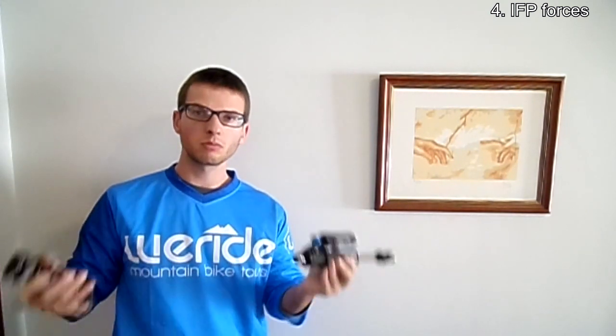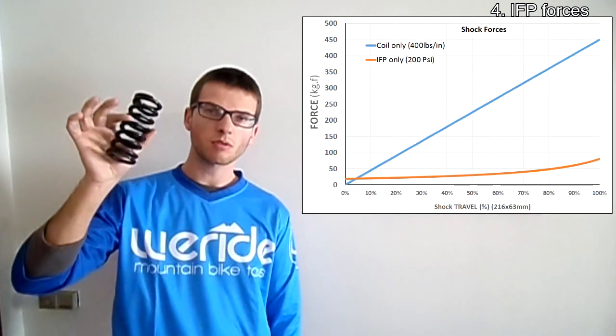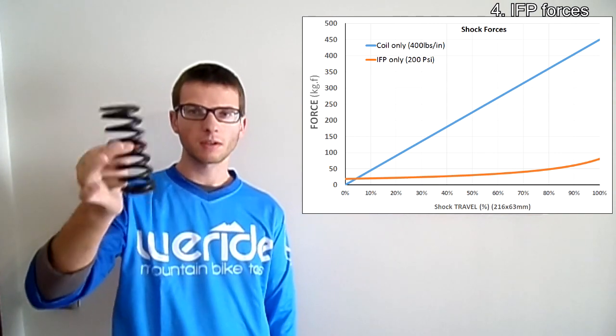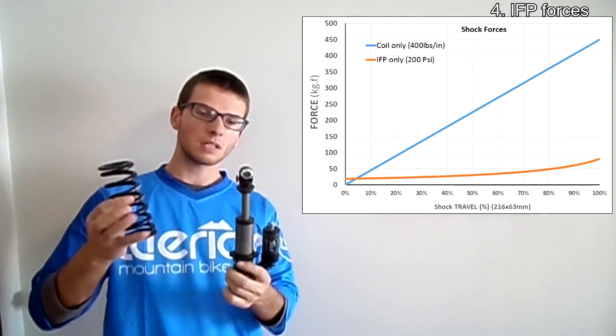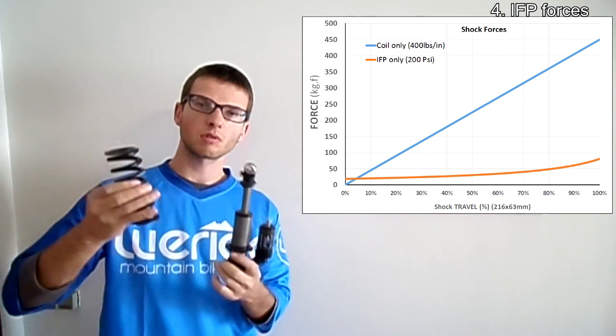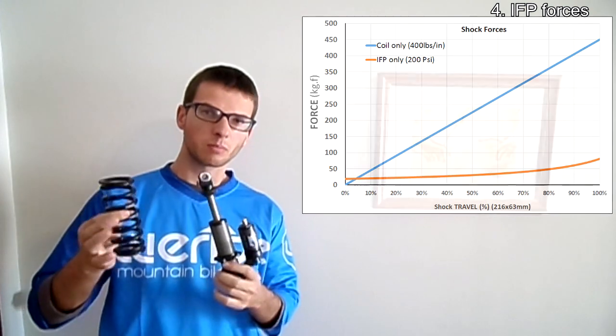Now let's compare the IFP-produced forces with the forces needed to fully compress the spring, and see what percentage the IFP contributes to the overall spring rate of your shock. In my case I need about 450 kilograms of force to fully compress the spring. Since the IFP produces about 80 kilograms, this means the IFP contribution to the overall spring rate is almost 20 percent. Depending on your shock type, your weight, and your spring rate, the IFP will contribute around 10 to 25 percent of force.